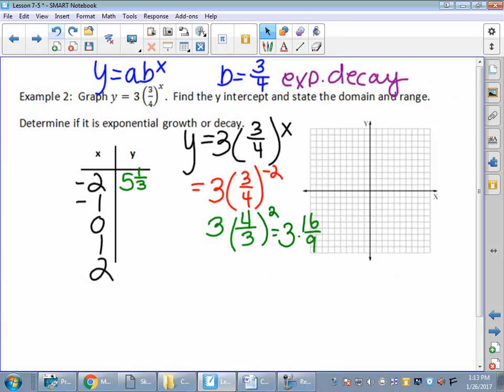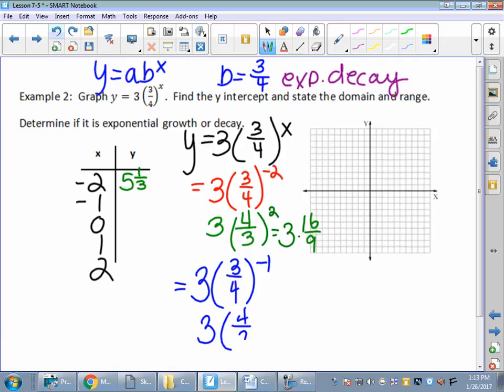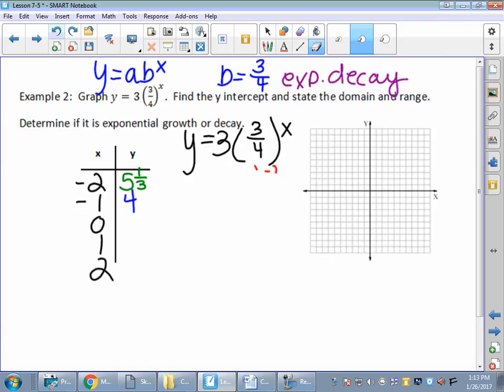So I'm going to do the same thing with negative 1. I'll probably erase some of my work here. 3 times 3 fourths to the negative 1 power, which means I'm going to do my reciprocal. 3 times 4 thirds to the positive power. I'm going to say that's a 1. Try it on your calculator. 3 times 4 thirds. Let me move this. I'm going to put a 0 in there. 0 is the best number of all because 3 fourths to the 0 power equals 1. Still times it by 3, so I get a 3.